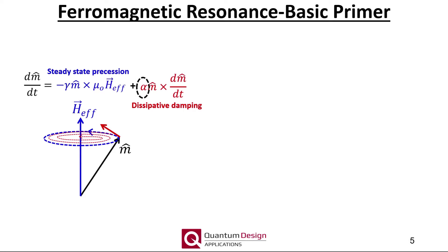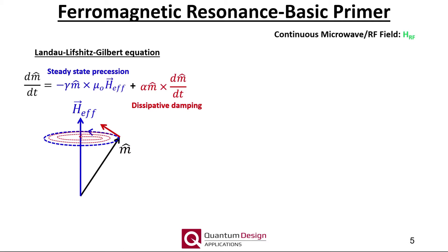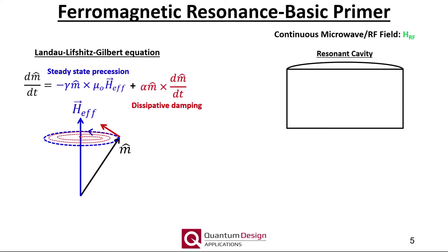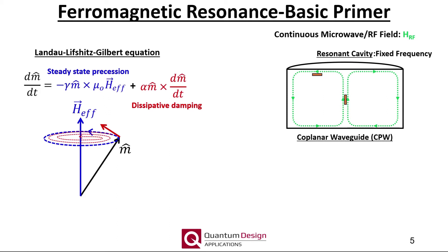The magnitude of this dissipative contribution is quantified by the phenomenological damping parameter alpha. The complete differential equation is known as the Landau-Lifshitz-Gilbert equation. While pulse field measurements have been performed in the literature, most measurements are performed using a continuous RF excitation field. Traditionally, this type of excitation has been carried out and accomplished by a resonant cavity, which is basically just a metallic box. Here is an example of a cylindrical cavity in cross-section. The microwave, or RF field, shown in green, will have a given spatial profile that allows one to place a sample such that the RF and DC magnetic fields are along a desired direction.